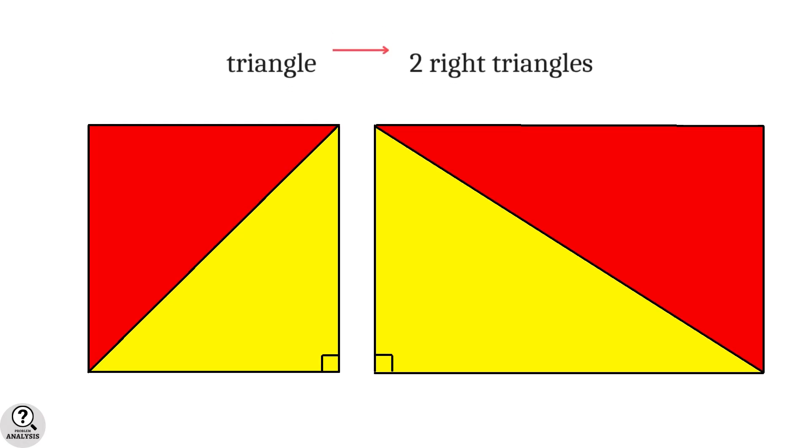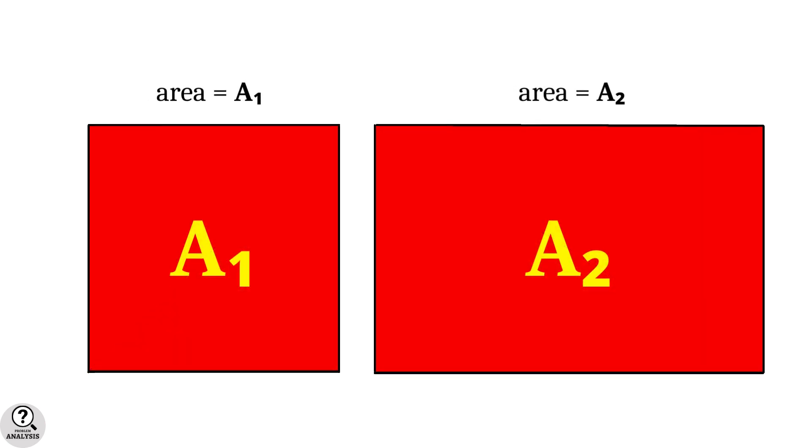Our triangle splits into two right triangles. It is clear from the figure that both the right triangles are exactly half part of the corresponding rectangles. That is, if we know the area of each rectangle, then the area of the right triangles are exactly half of them.